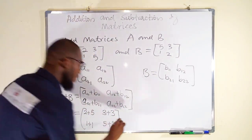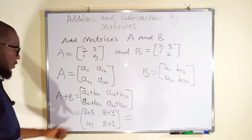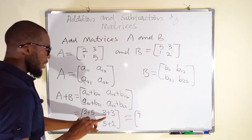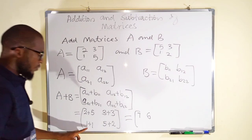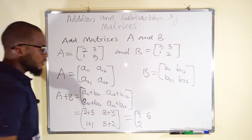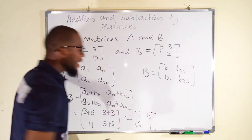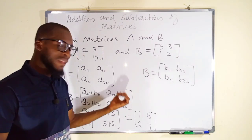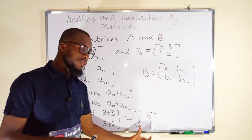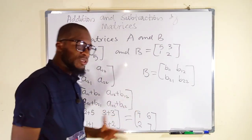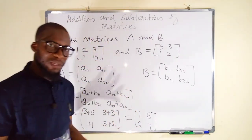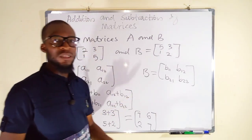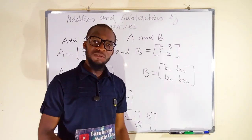So if you simplify: two plus five equals seven, three plus three equals six, one plus one equals two, five plus two equals seven. By adding matrix A and matrix B we obtain a single matrix: seven, six, two, seven. This is how to add matrices — make sure they are of the same dimension, and every element is added to its corresponding element. Let's take another example.